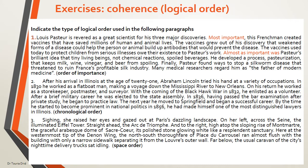To create coherence in a paragraph, the writer can use logical order. This is to use a rational way of linking the ideas to each other. There are types of logical orders like order of importance, chronological order, and space order.